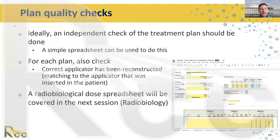Plan quality checks: ideally an independent check of the treatment plan should be performed using a simple spreadsheet or available software. For each plan, check that the correct applicator has been reconstructed and matches the applicator inserted in the patient — particularly important if using a library. A radiobiological EQD2 dose spreadsheet should also be verified. All of those items need to be double-checked.